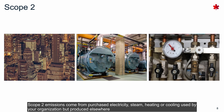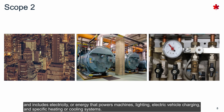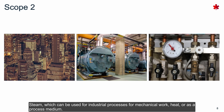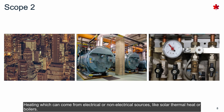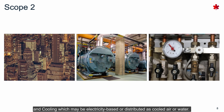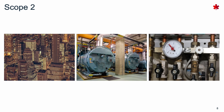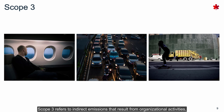Scope 2 emissions come from purchased electricity, steam, heating, or cooling used by your organization but produced elsewhere. This includes electricity or energy that powers machines, lighting, electric vehicle charging, and specific heating or cooling systems, such as steam used for industrial processes, heat from electrical or non-electrical sources like solar thermal or boilers, and cooling that may be electricity-based or distributed as cooled air or water.